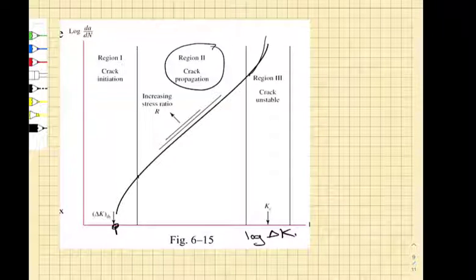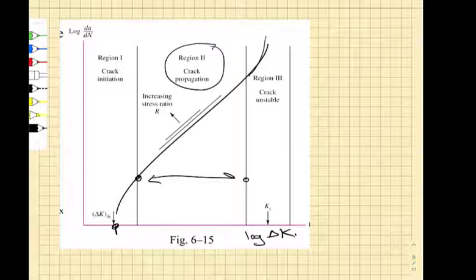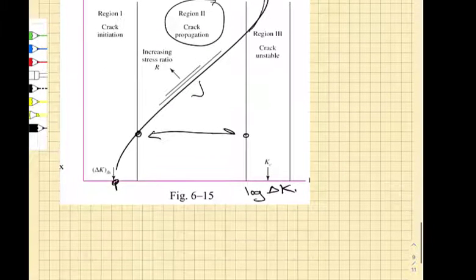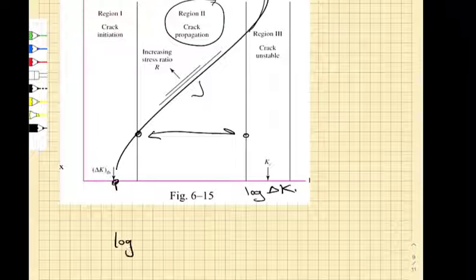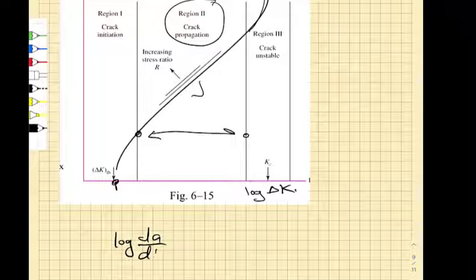Then we get a region of stable crack propagation. It's called region two. And then the crack takes off rapidly and you get failure.